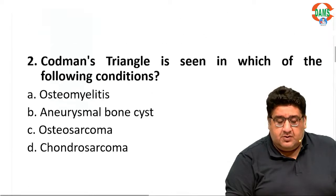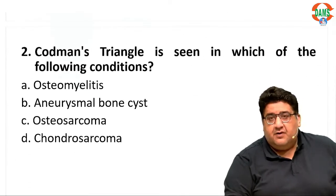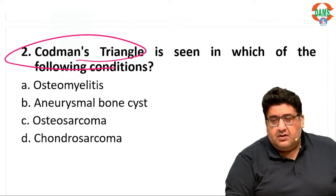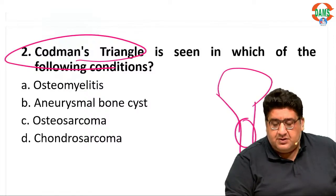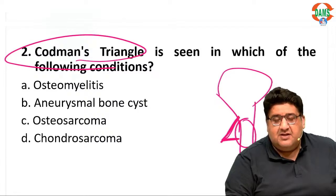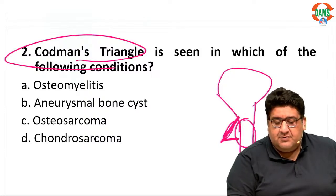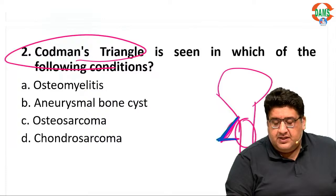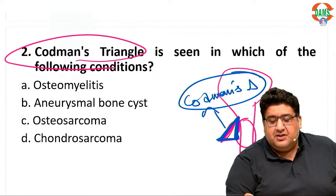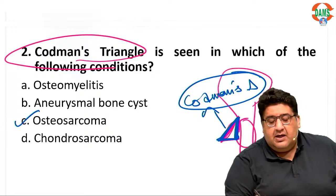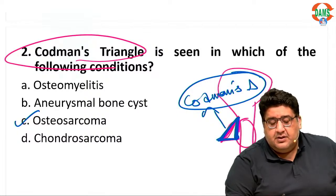When we talk about the second question, Codman's triangle is seen in which condition. Codman's triangle can be seen in multiple conditions — anywhere if the bone shows some internal pathology where the periosteum is elevated and that lifting of the periosteum takes the shape of a triangle. Any internal pathology of the bone lifting the periosteum in the shape of a triangle is called Codman's triangle. The perfect answer for Codman's triangle is osteosarcoma.